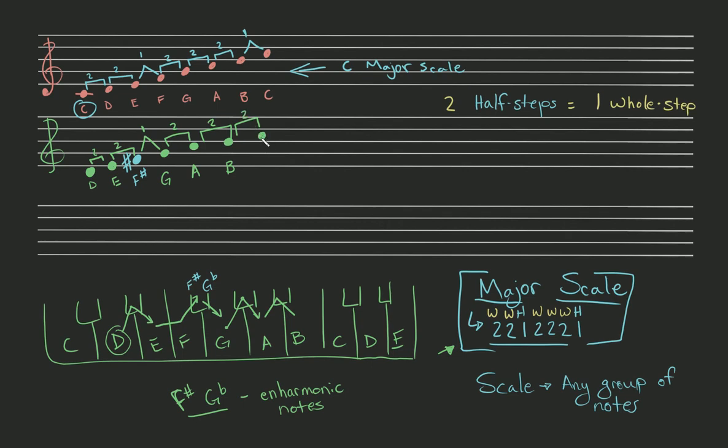Going up two is C something. We got C - there's one, there's two. Now we know this can be C sharp or it can be D flat, but because we need C next, we've got to make this a C sharp, just like that.